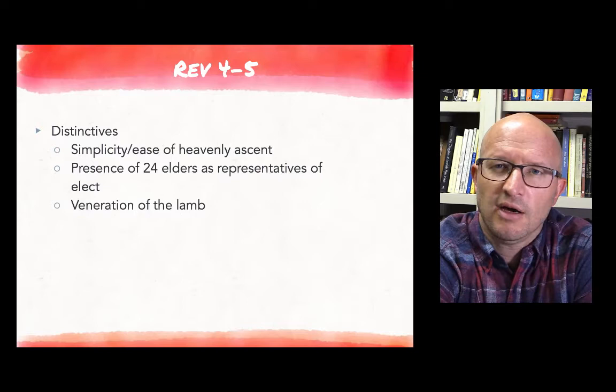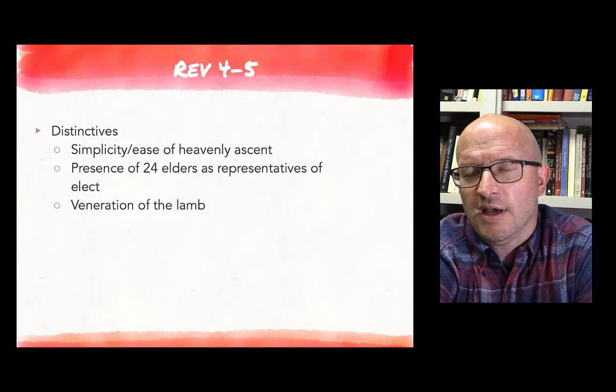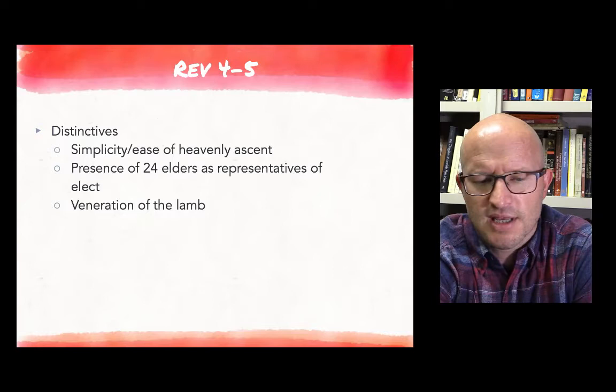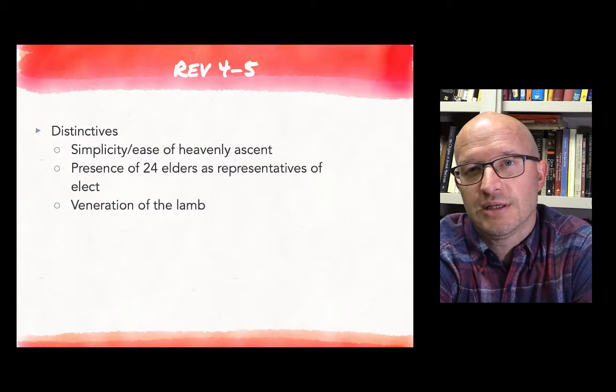When we compare Revelation 4 and 5 to these earlier or other traditions, we do see, I think, as Hurtado says, three distinctive elements. The first is that in comparison to something like 2 Baruch or some of these other apocalyptic texts, John has relatively easy access to heaven. There's no hoops to jump through, there aren't multiple heavens. There is an open door rather, an access point that is relatively easy.